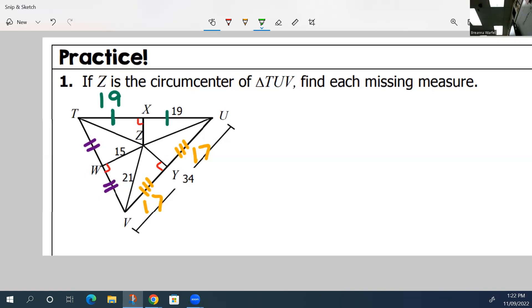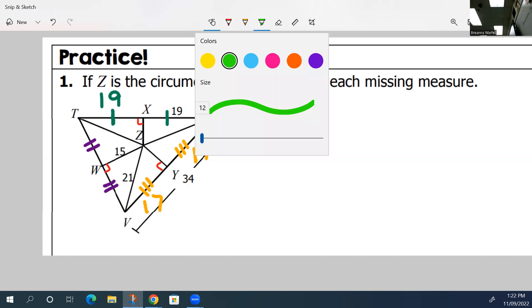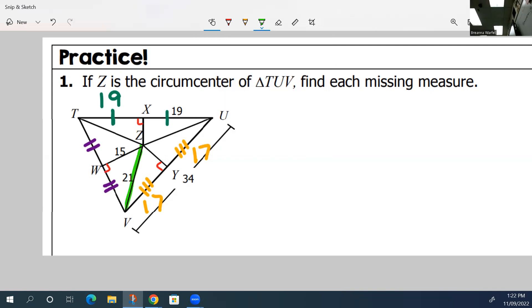We also know that this length from V to Z, from the vertice to the circumcenter, is 21. Well, in the notes, it tells us that every one of those is congruent. So that means T to the circumcenter and U to the circumcenter are also 21. So that means that each of these are also 21. This is 21, this is 21, and then you have your other 21.